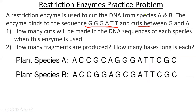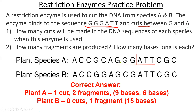Here's a practice example of how a restriction enzyme works. You'd be given the specific sequence where that restriction enzyme cuts, then look for it in your DNA sample, mark where the enzyme would cut, and tell me how many cuts were made and how many pieces result. If an enzyme cuts once, two pieces remain. Plant species A gets cut once. Plant species B doesn't have that sequence at all, so it remains one fragment. Species A gives pieces of nine and six bases; species B stays a full 15 bases.